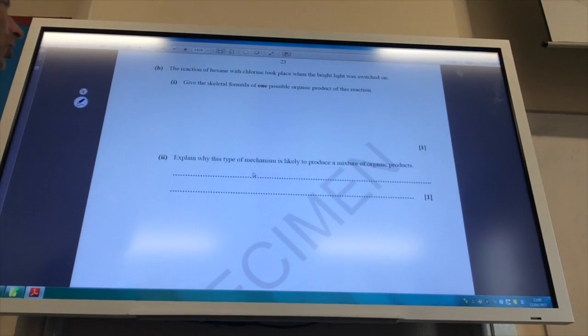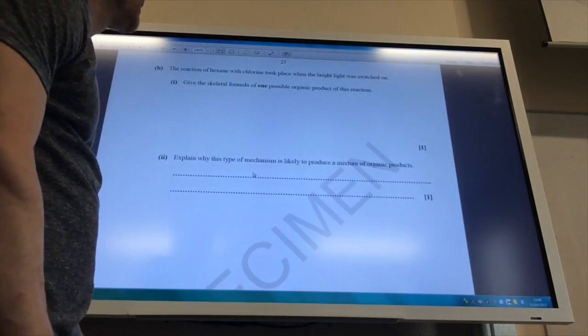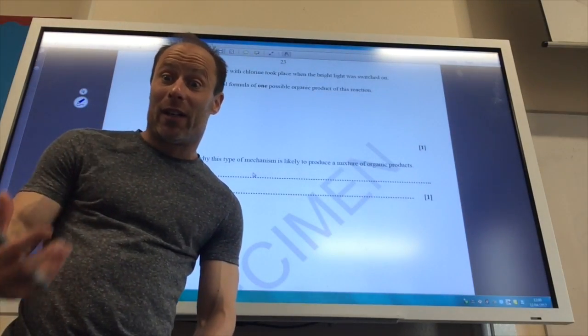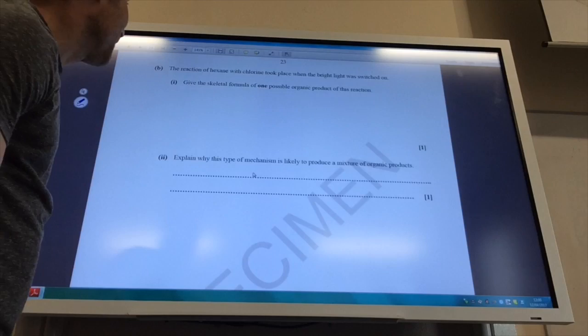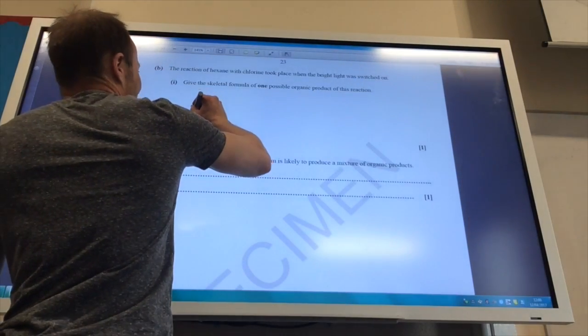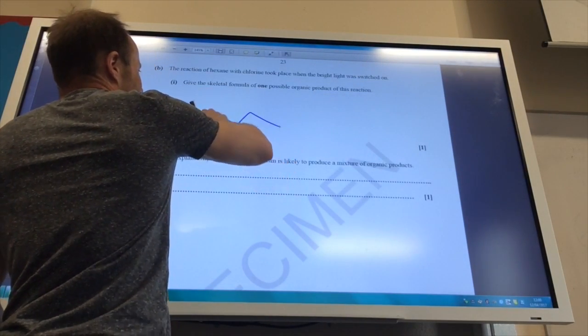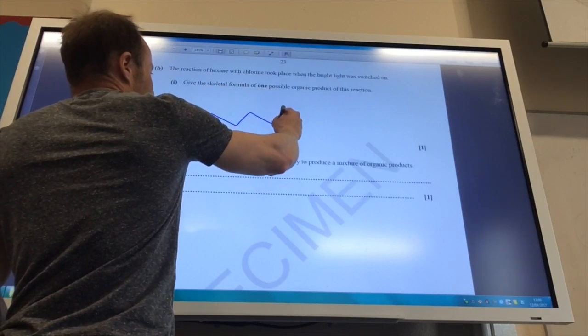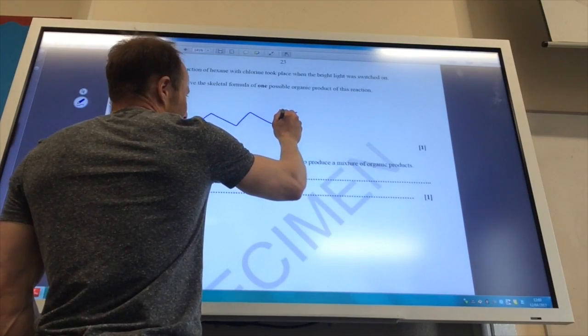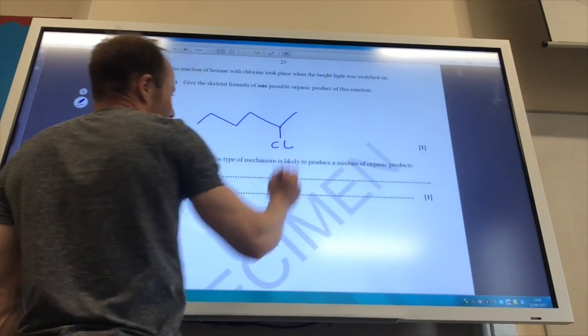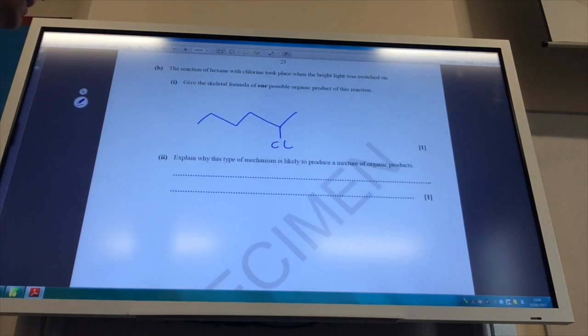The reaction between hexane and chlorine took place when a bright light was switched on. So whenever you think bright light, always think free radical substitution. Give the skeletal formula of one possible organic product. So it's hexane. So I need six carbons. One, two, three, four, five, six, like so.